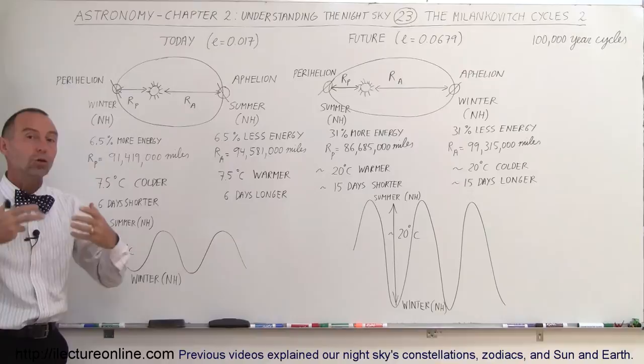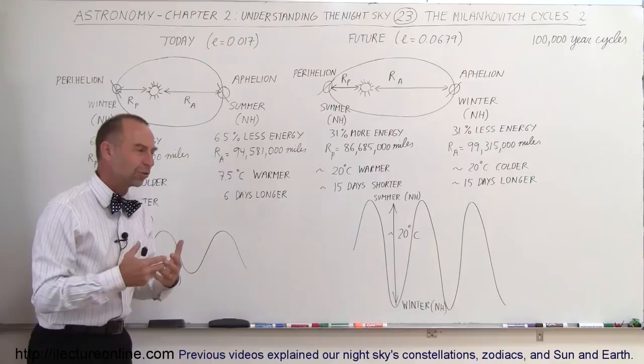Which means that we receive about 6.5% more energy from the Sun during the Northern Hemisphere's winter and about 6.5% less energy during the Northern Hemisphere's summer.